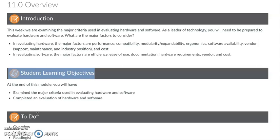On the software side, there are major factors we need to consider: the efficiency of use, whether we have good documentation, whether we know what the hardware requirements are — which may then lead back to suggesting particular hardware that's needed. Vendor and cost are also factors. Many times we have free apps and software available, but often there's a cost to do what we really need to do with it.